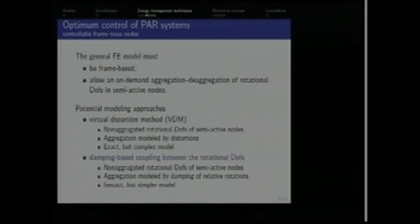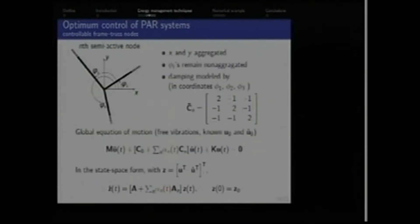So modelling of such aggregation and de-aggregation is possible in several ways. So the first way is the virtual distortion method by Professor Holnicki. And the other way we have started with is just by increasing, significantly increasing, the damping of the relative motion of the rotational degrees of freedom. The first approach is better because it's more exact. It allows us to model aggregation exactly, but it leads to quite complicated formulas. So we have started with this other approach which is inexact because even in the aggregated state we have basically a mechanism. But it leads to simpler formulas which are much easier to deal with.